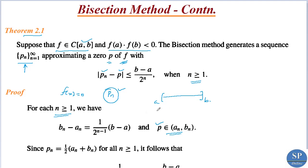If n = 1, we have a1 and b1, so b1 - a1 = b - a itself, which equals (b - a) / 2^0, so it is true. If n = 2, we have b2 - a2: first there will be some p1, and then we use either the left or right subinterval depending upon the position of the original root. So a2 and b2 give length b2 - a2 = (b - a) / 2^1 = (b - a)/2, meaning this distance is half the original distance.